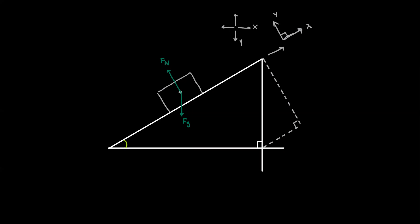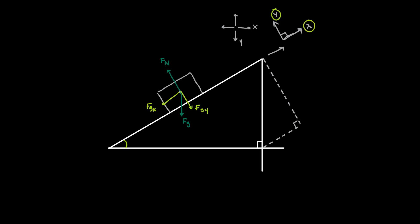What this basically forces us to do is create components of gravity, because gravity is going to continue to act straight downwards — it's not going to tilt with our axis. So what we need to do is set up a y-component of gravity that aligns with our tilted y-axis, and an x-component of gravity that aligns with our tilted x-axis.